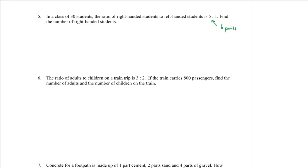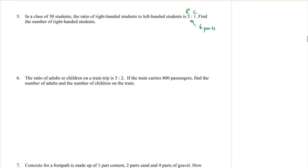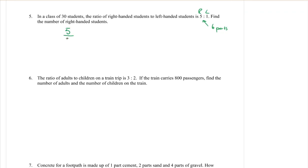Find the number of right-handed students. So it was right-handed students to left-handed students. The right-handed people is the 5. So let's make it into a fraction: 5 students out of a total of 6 in the ratio, 5 parts out of 6. If I multiply that by 30 students in the class, what does it equal? 25, good. So there are 25 students that are right-handed.